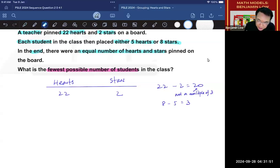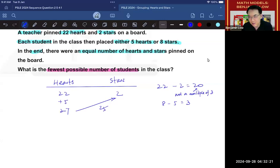I know that 8 minus 5 will give me 3. So then, we will never get a solution if we were to have an equal number of students putting hearts and stars. So we need to make it such that the difference between these two numbers is a multiple of 3. Let's try something. If I were to add 5 here and get 27, this means I have an additional student that puts hearts. And I take 27 minus 2, I get 25, which is not a multiple of 3.